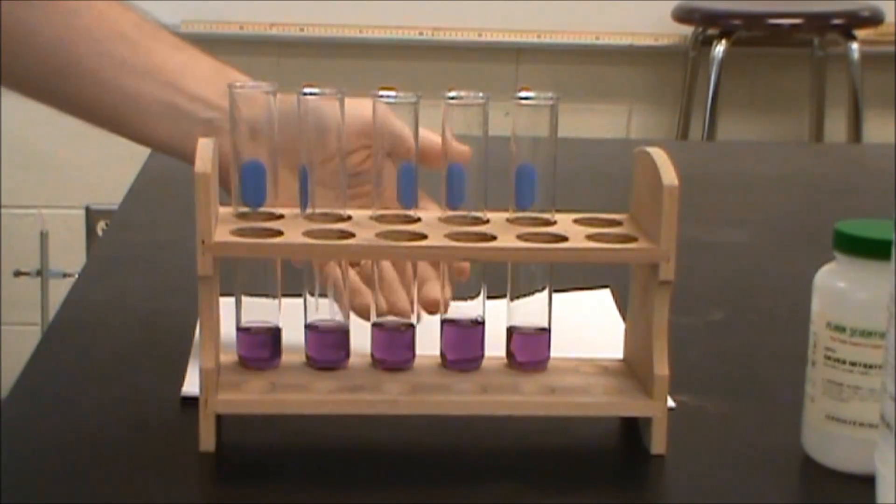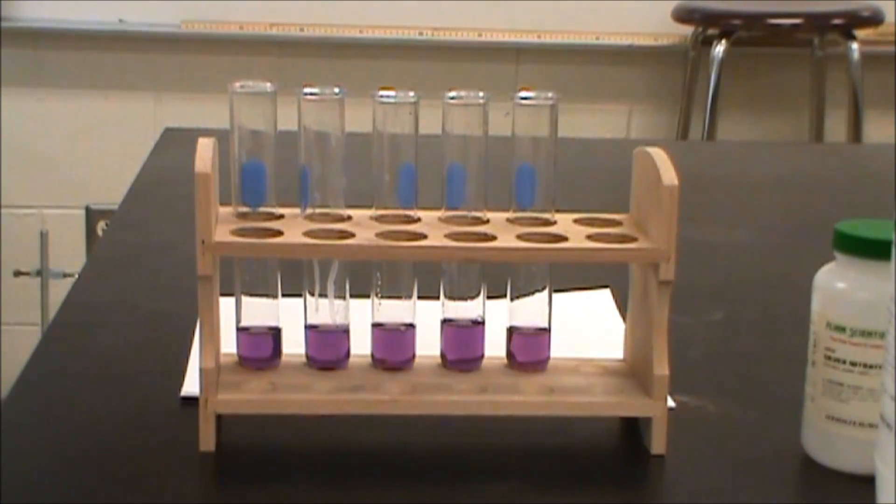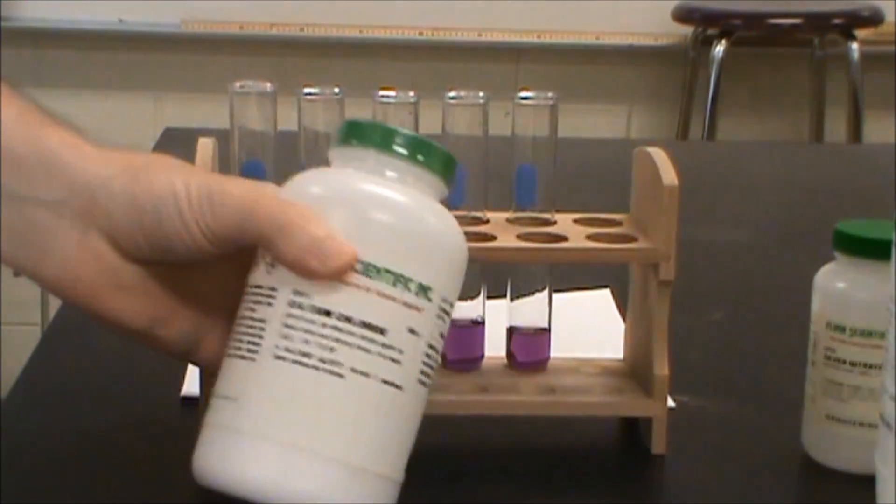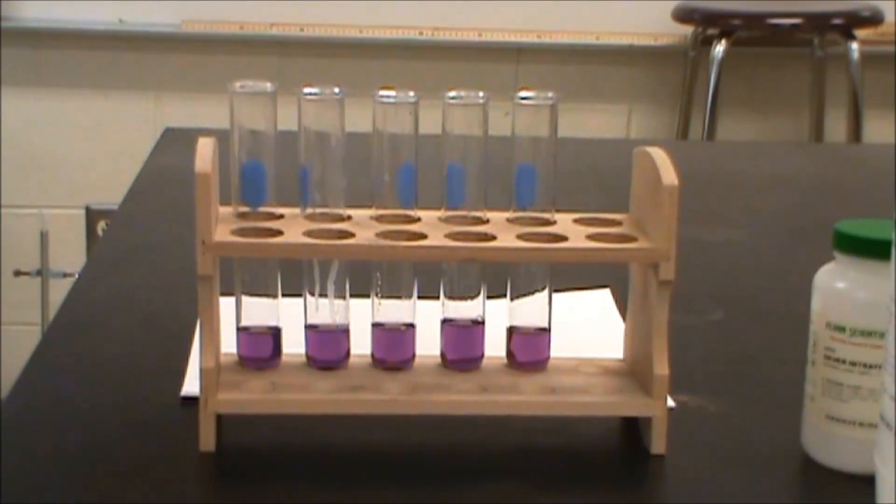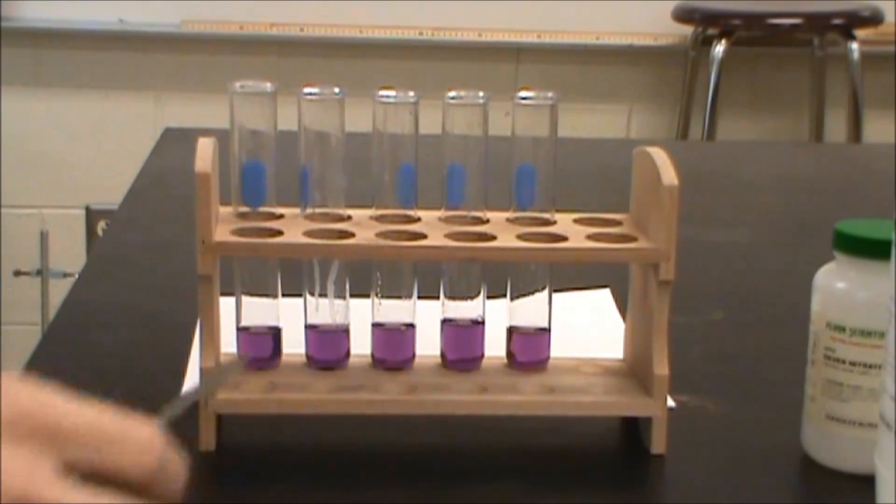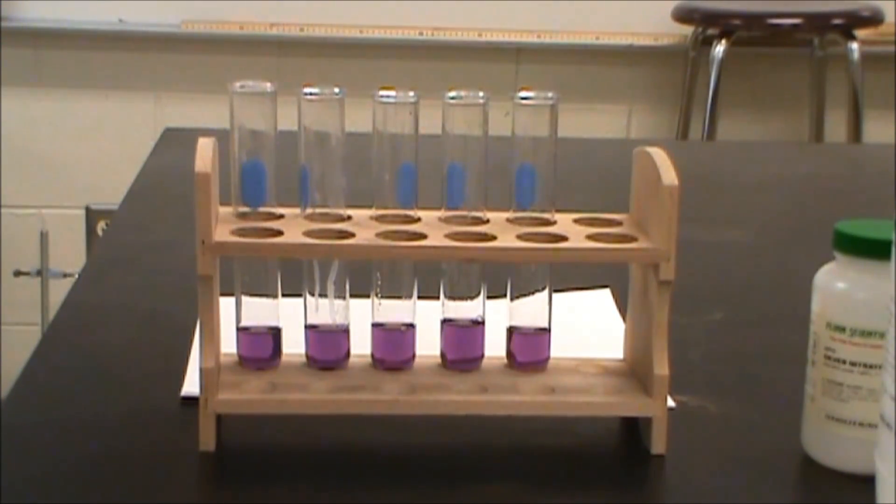So here we have five solutions set up. I'm going to do the first four. We're going to add calcium chloride, water, silver nitrate, and acetone. And then I have a fifth here so we can compare the color after we're done.